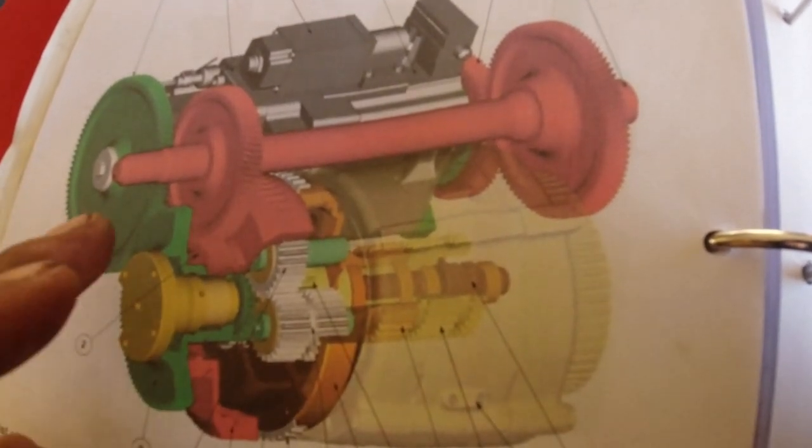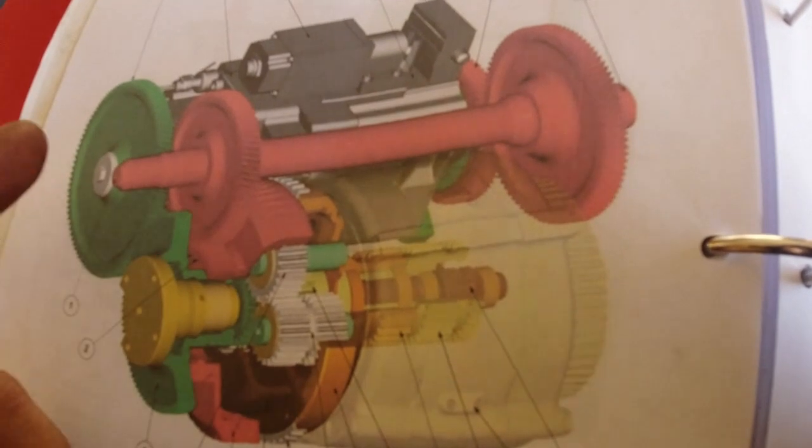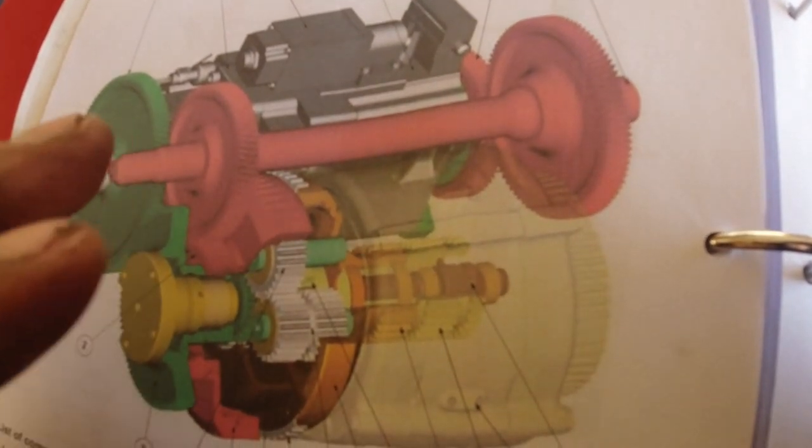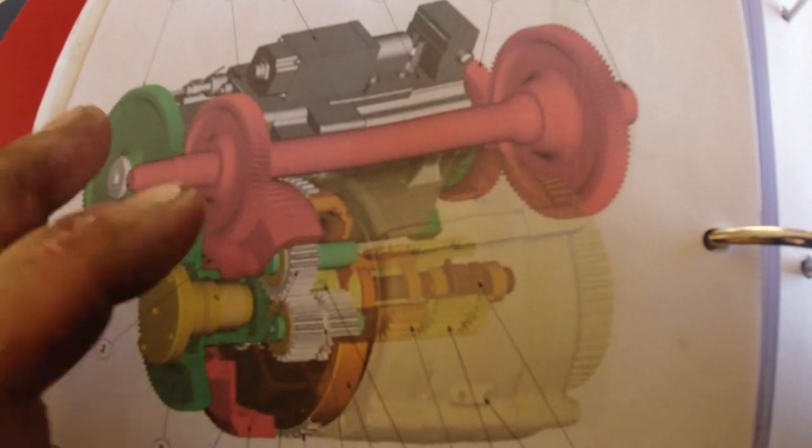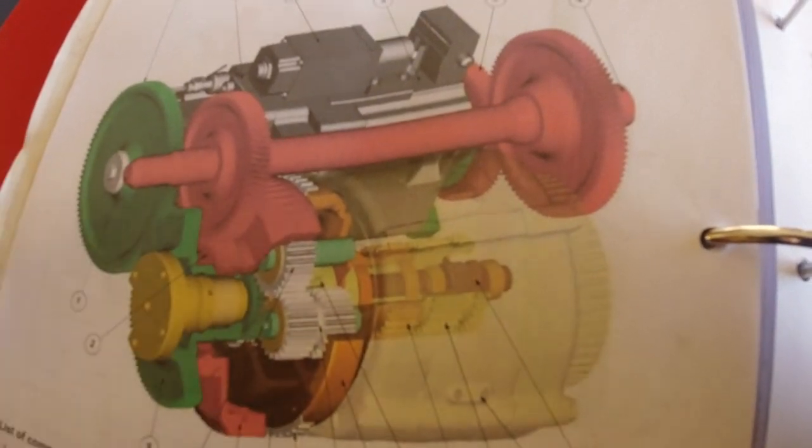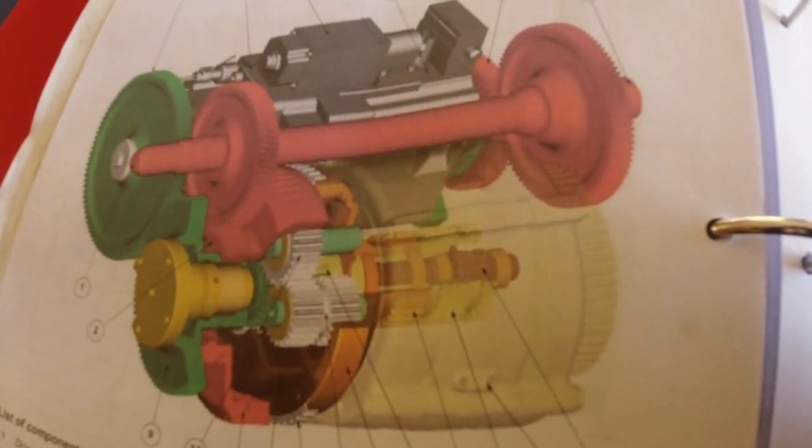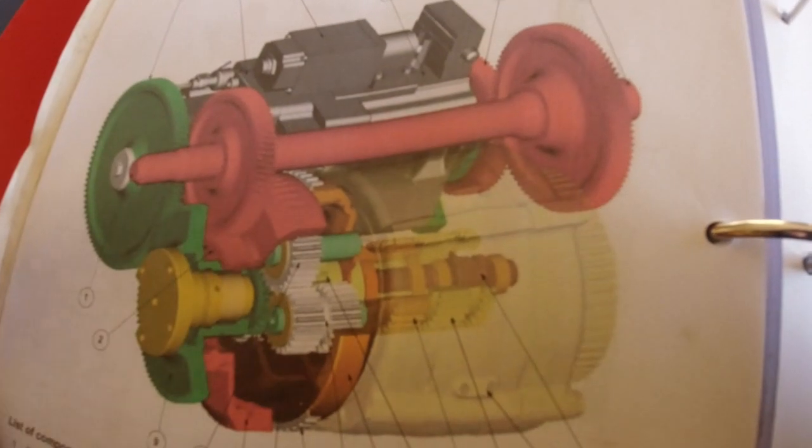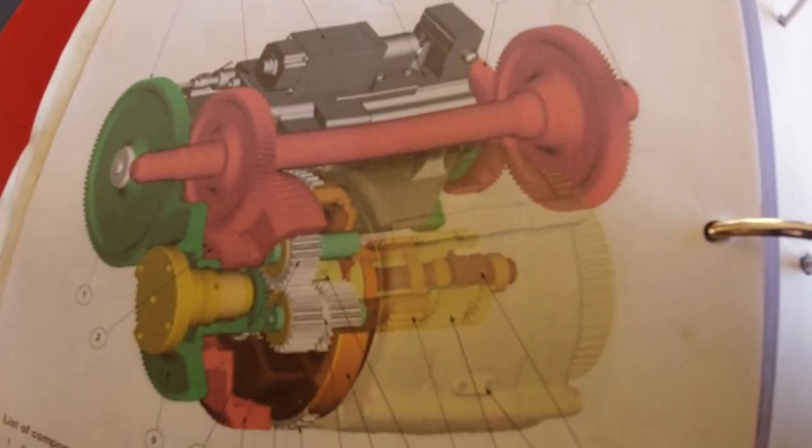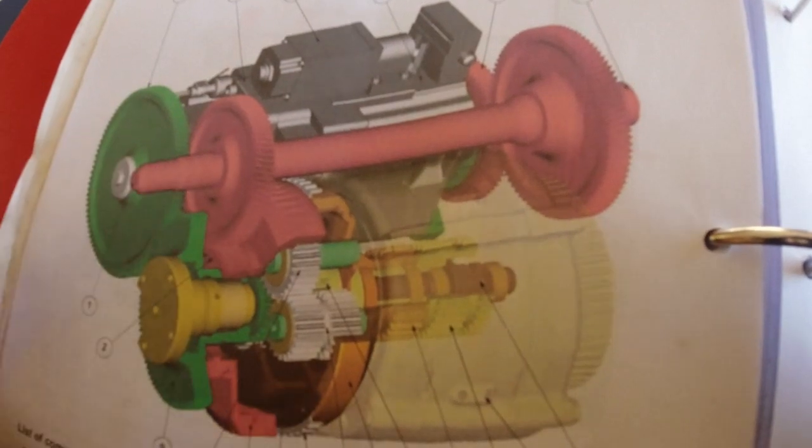So in layman's terms, the engine can control the transmission or the transmission can control the engine, vice versa. That is a feature that Fendt didn't come out with until around 2002 or 2003, so they were well ahead of the game on that aspect.